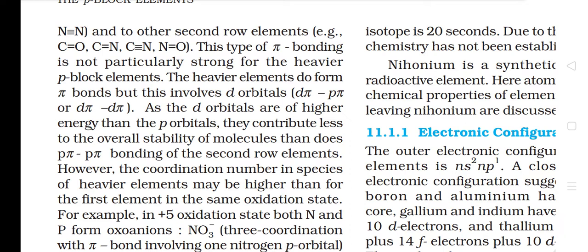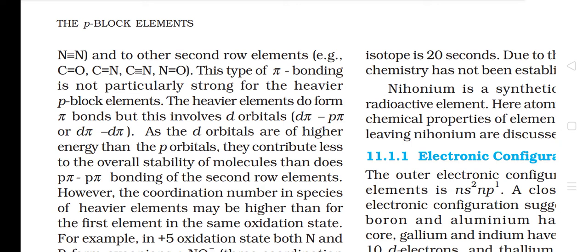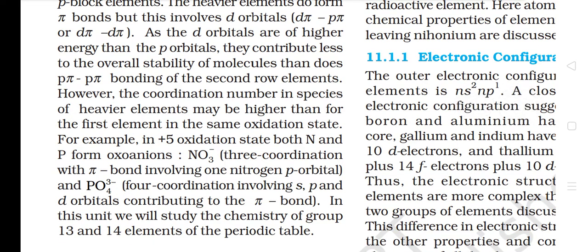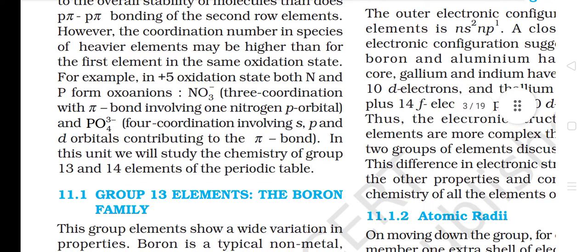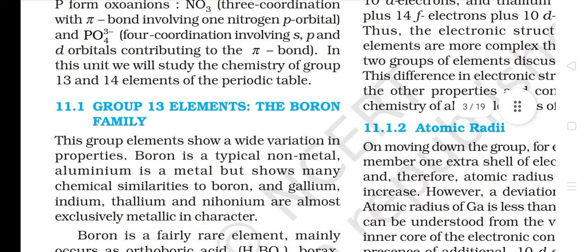This type of pi bonding is not particularly strong for the heavier P-block elements. The heavier elements do form pi-bonds but this involves d orbitals — dpi-ppi or dpi-dpi. As the d orbitals suffer higher energy than the p orbitals, they contribute less to the overall stability of molecules than does ppi-ppi bonding of the second row elements. However, the coordination number in a species of heavier elements may be higher than for the first element in the same oxidation state. For example, in the +5 oxidation state, both N and P form oxoanions: NO3- (3-coordination with pi bond involving one nitrogen p orbital) and PO4-3 (4-coordination involving s, p and d orbitals contributing to the pi bond). In this unit, we will start the chemistry of group 13 and 14 elements of the periodic table.